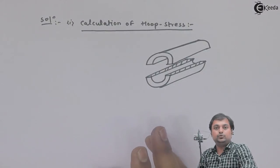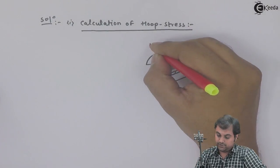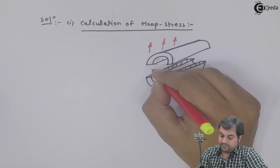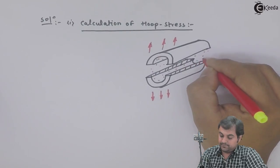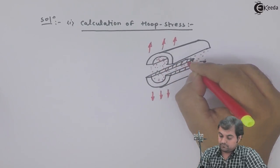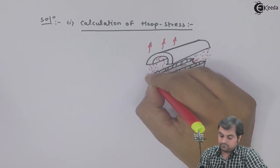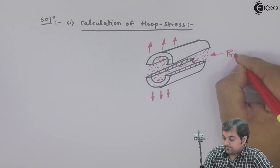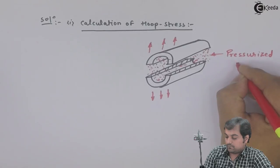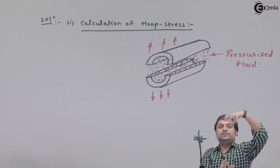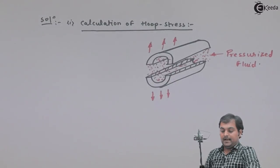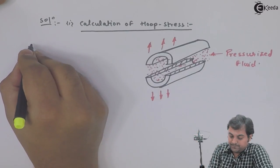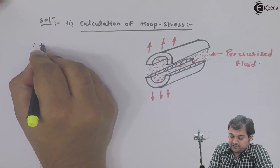The cylinder will be breaking into two halves as shown here because of the bursting pressure, as there is internal fluid at pressure. This pressurized fluid will try to break open the cylinder into two halves along its diameter. Because of this, the stress which is developed is called hoop stress.